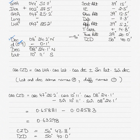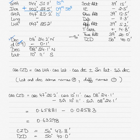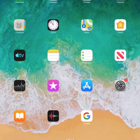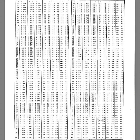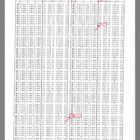Now I find the increment, which is always added to the GHA. I go into the increments page for 9 minutes and 50 seconds — this is only for 15 hours — so my GHA will be for 15 hours 09 minutes 50 seconds. For the declination D correction, I also use 9 minutes and 50 seconds from the same increment page in the nautical almanac, going to the increments section.